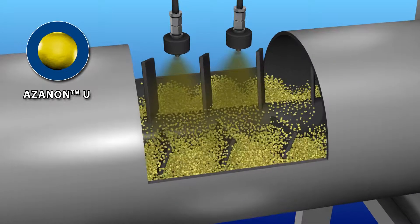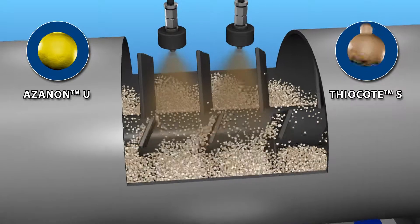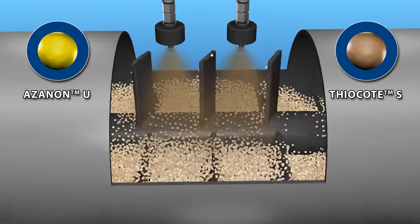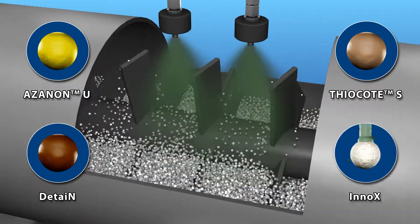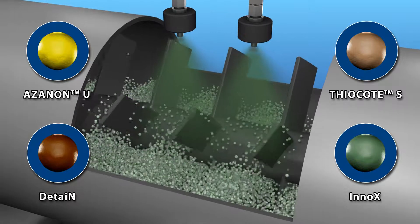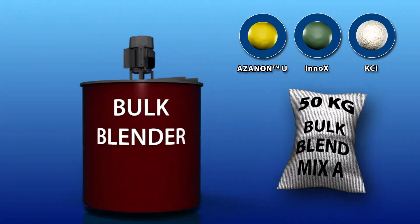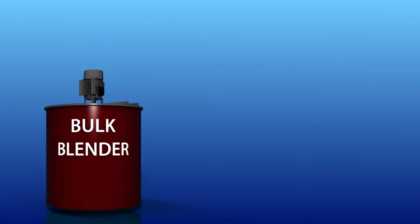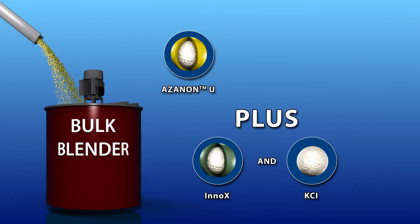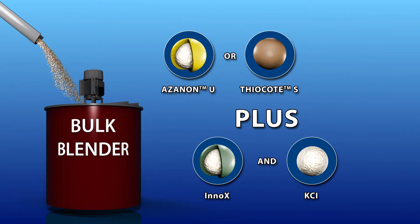To produce Azenon-treated urea, Thiocoat-S treated urea, or Detain-treated urea, and ENOX-treated DAP for your own custom blends, Kimli can partner with bulk blenders to successfully add value or differentiate fertilizer mixes from competitors.